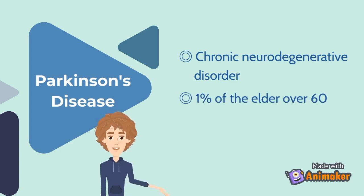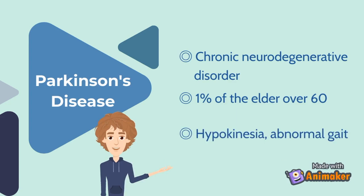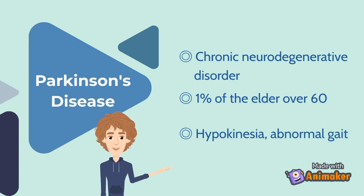Ordinary PD can only be judged by symptoms such as hypokinesia and abnormal gait. As the disease progresses, the neurons will keep dying. Unfortunately, PD is still incurable at present. Patients can do nothing but control the speed of disease progression through diet, medication, and rehabilitation.